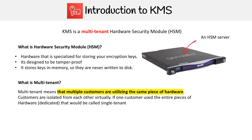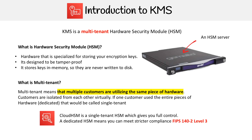If one customer utilized the entire piece of hardware — which we call dedicated — that would be single-tenant because there's only one person using that server. AWS actually has a single-tenant HSM called Cloud HSM, which gives you a lot more control. People would use Cloud HSM over KMS because Cloud HSM is FIPS 140-2 level three, whereas KMS is only FIPS 140-2 level two. The takeaway is that Cloud HSM is more for enterprises that need to meet those regulations, but KMS is a really great service to utilize.